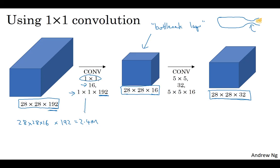That's the cost of this first convolutional layer. The cost of this second convolutional layer will be 28x28x32 outputs, and for each of the outputs, you have to apply a 5x5x16 dimensional filter. You multiply that out, it equals 10 million. The total number of multiplications you need to do is the sum of those, which is 12.4 million multiplications. If you compare this with what we had on the previous slide, you reduce the computational cost from about 120 million multiplies down to about one-tenth of that, to 12.4 million multiplications.